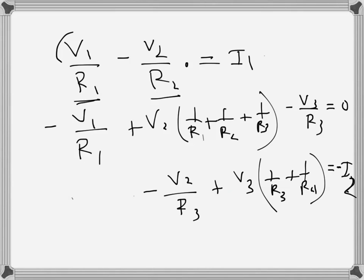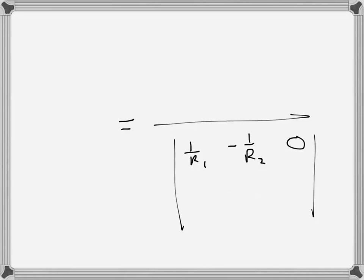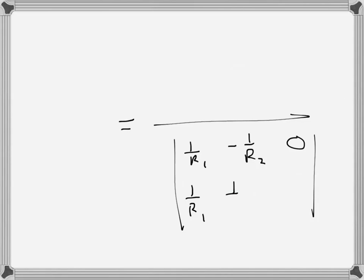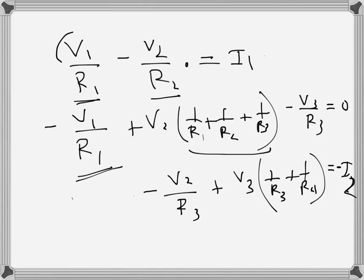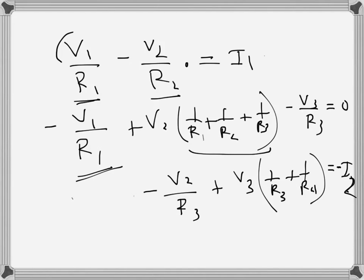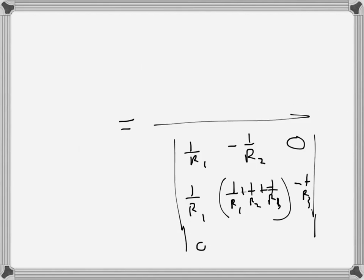The second row: coefficient of V1 is 1/R1, coefficient of V2 is (1/R1 + 1/R2 + 1/R3), and coefficient of V3 is minus 1/R3. The third row: V1 coefficient is 0, V2 coefficient is negative 1/R3, and V3 coefficient is (1/R3 + 1/R4).